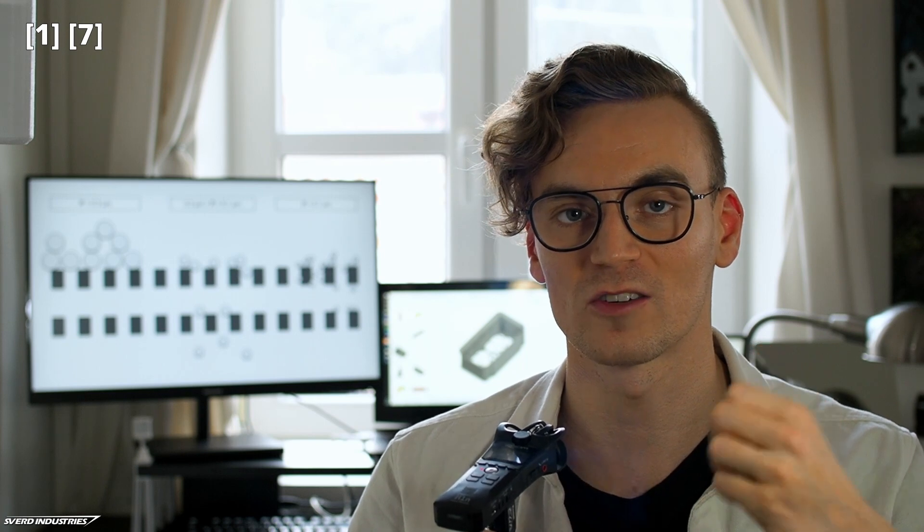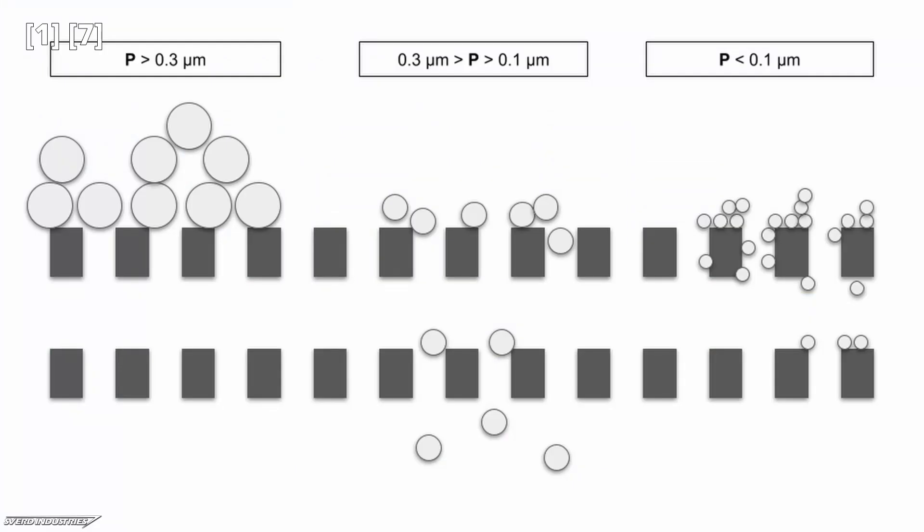This is called Brownian motion and it actually increases the likelihood that particles will come into contact with the filter walls where they get stuck due to the filter's attraction force. It's the medium-sized particles between 0.1 and 0.3 micrometers that are the most difficult to capture, because they are so small they can pass through the filter openings but are not so small they get influenced by other particles in the air, so they can easily flow on the airstream through the filter.